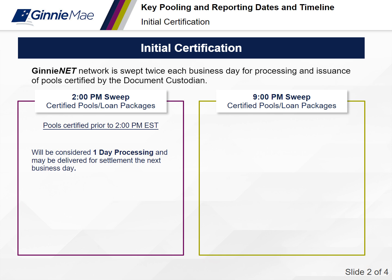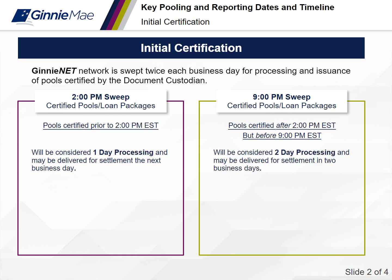We download at 2 p.m. and also at 9 p.m. Anything with a certified status downloaded at 9 p.m. will be considered two-day processing — settlement in two days. For example, a 9 p.m. download on a given night would likely deliver on Monday if it were a regular day, because we do our due diligence and release all those pools on Friday afternoon at 2 p.m.